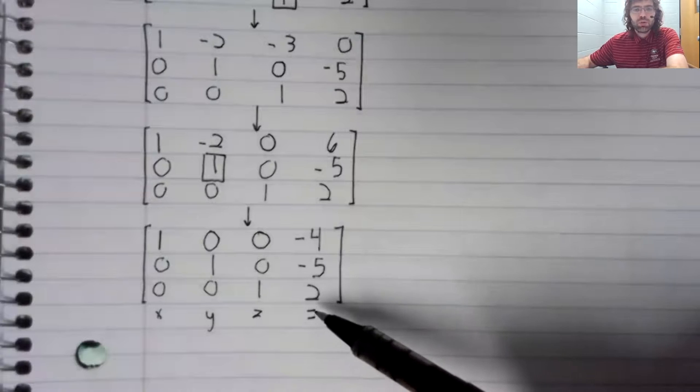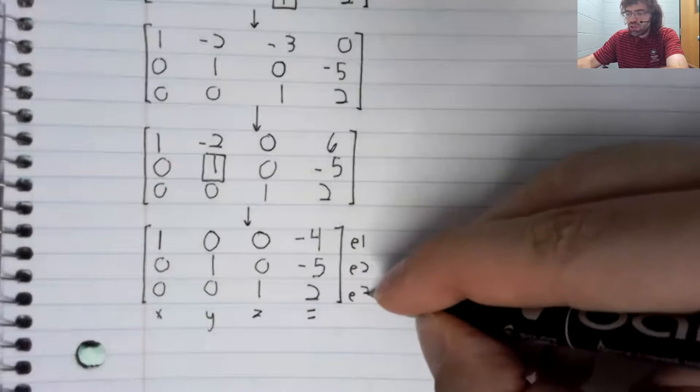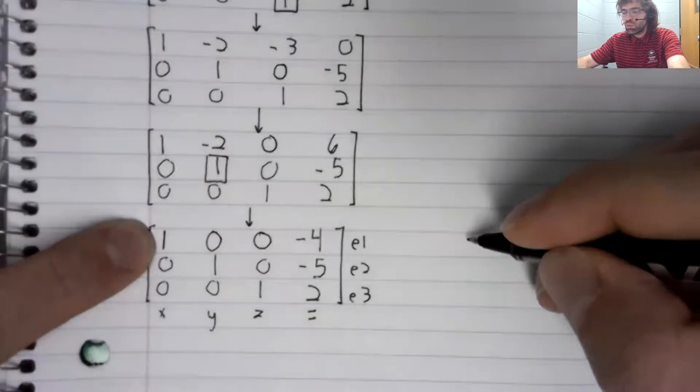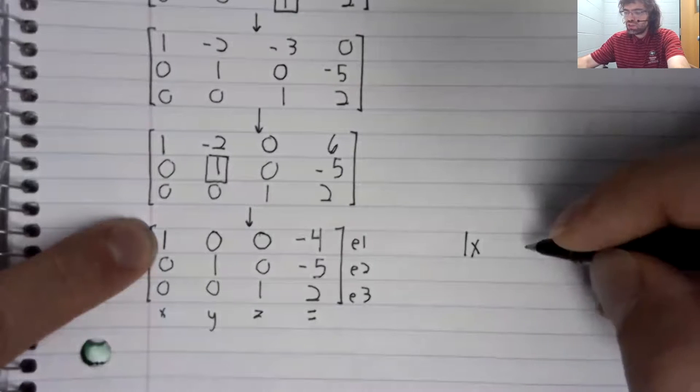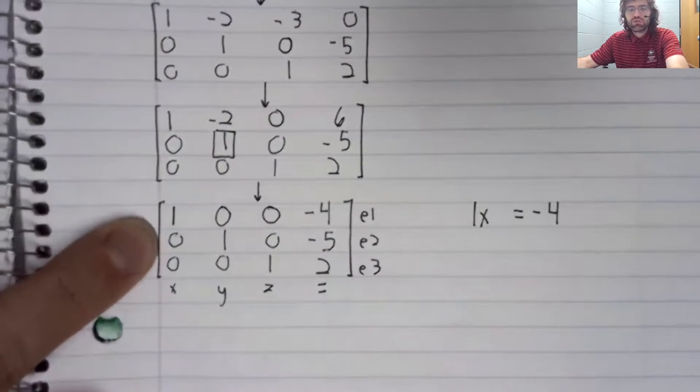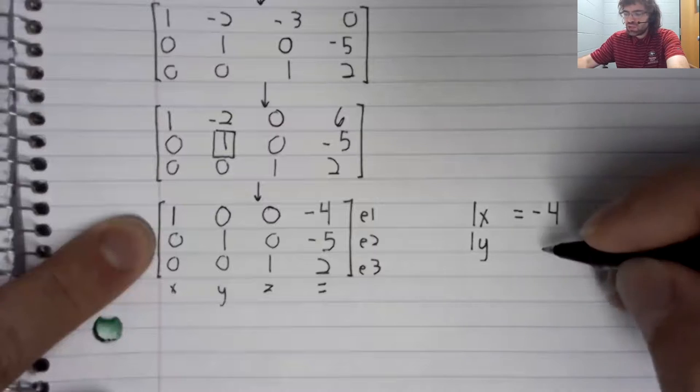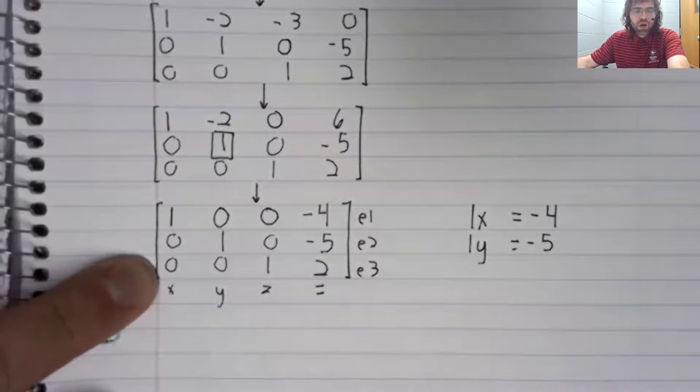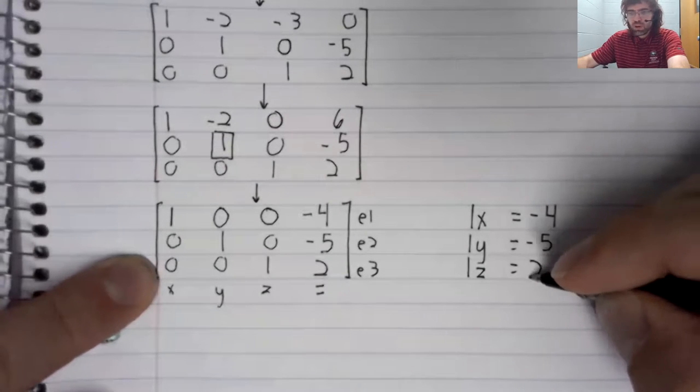So remember that these first three columns correspond to variables. The last column corresponds to equality. Each row corresponds to an equation. And what are these equations? First row: one X plus zero Y plus zero Z equals negative four. The second row: zero X plus one Y plus zero Z equals negative five. This third row: zero X plus zero Y plus one Z equals two.